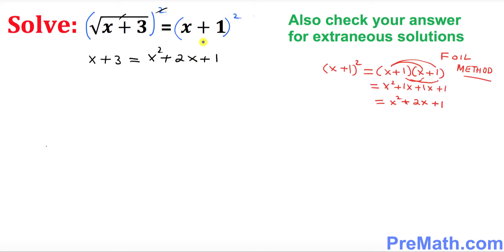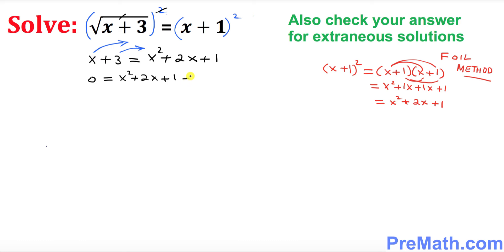When you take the square of (x+1), that gives you x² plus 2x plus 1. Now I want you to move everything on the right hand side — move x and 3 to the right hand side. Once you move everything, we get 0 on the left hand side. So x² plus 2x plus 1, then moving x gives negative x, and moving positive 3 gives negative 3.